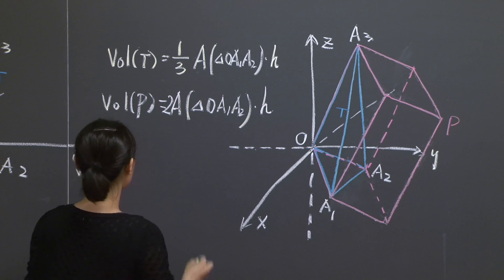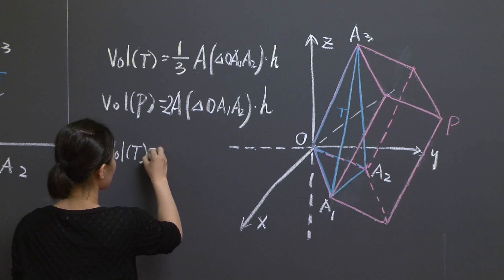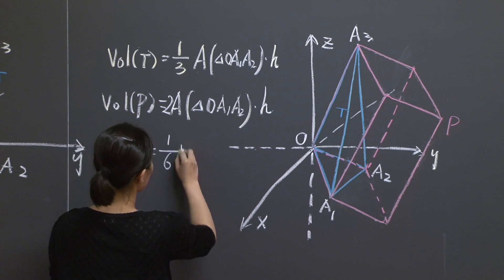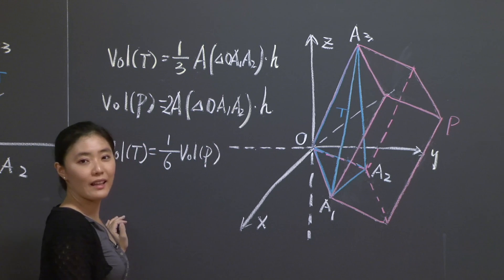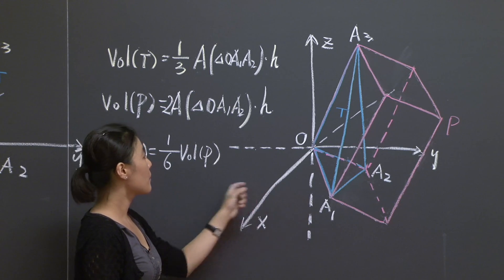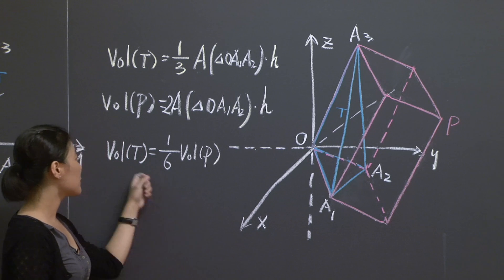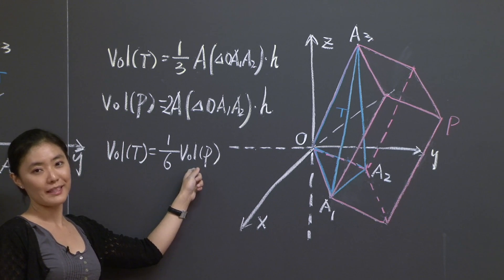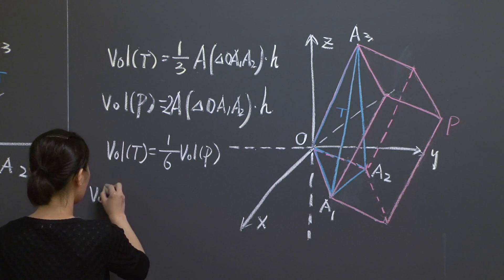Comparing the two formulas, we see that the volume of T is simply equal to one-sixth of the volume of P. That's the connection between the tetrahedron and the parallelepiped. To compute the volume of T, we only need to compute the volume of P.